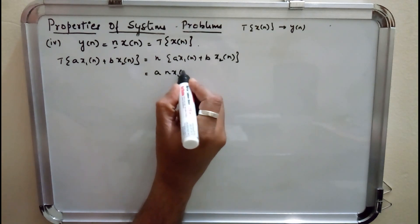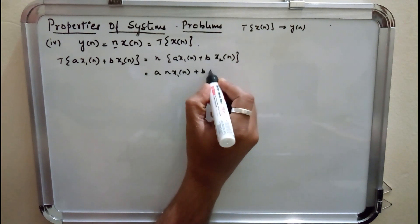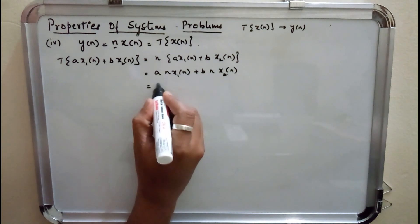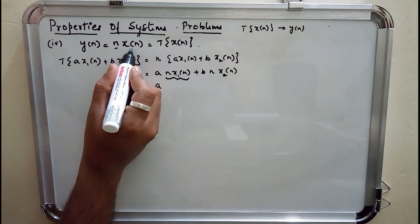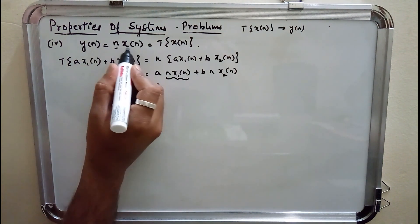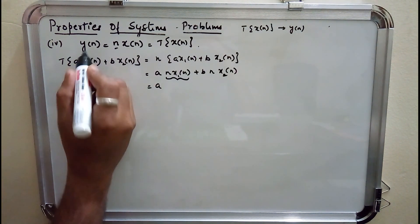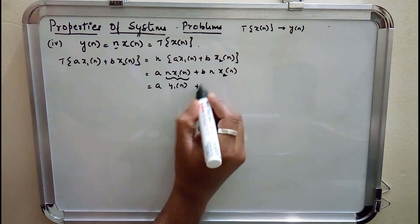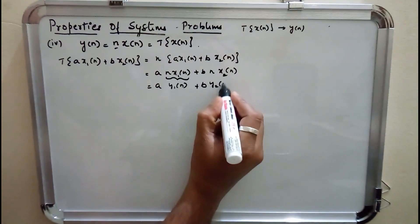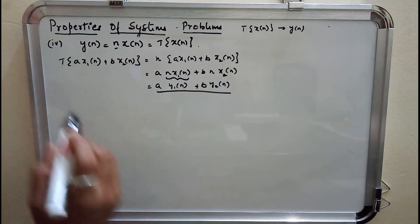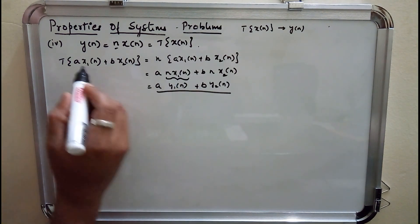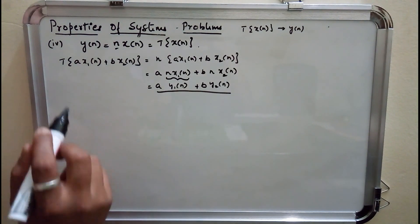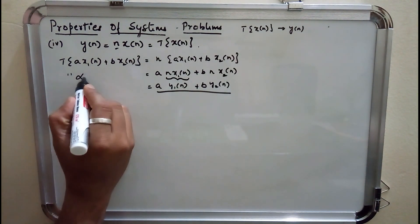That gives n into a·x1(n) plus b·x2(n), which can be written as a·n·x1(n) plus b·n·x2(n). Now a·n·x1(n) is nothing but a·y1(n) and b·n·x2(n) is b·y2(n). So if input is a weighted sum of two or more signals, output is the weighted sum of responses to the individual signals — this property is satisfied, hence the system is linear.